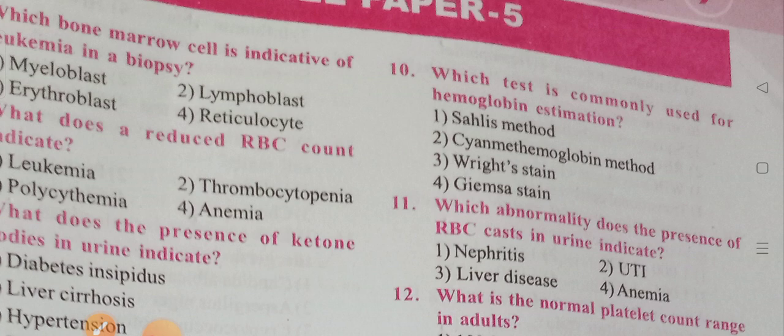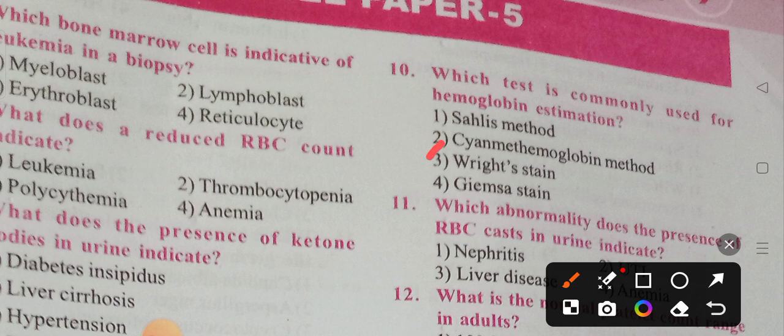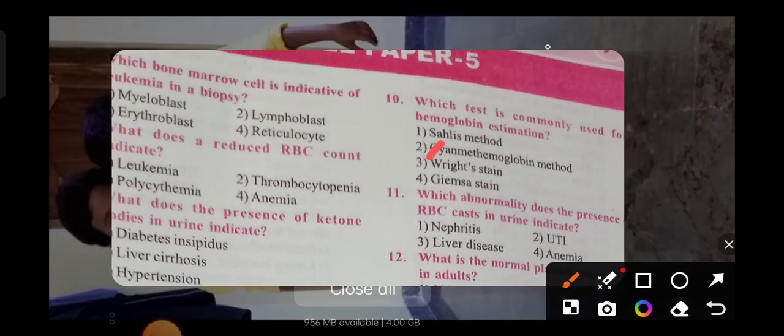Next question: which test is commonly used for hemoglobin estimation? The options are Sahli's method, Cyan method, globin method, Rice stain, and Giemsa stain. Option two, the Sahli's method, is the correct answer. Sahli's method and Cyan method are common methods used for hemoglobin estimation.